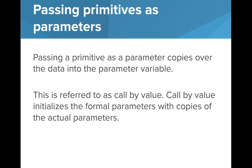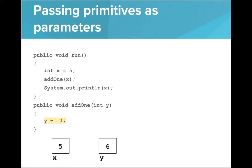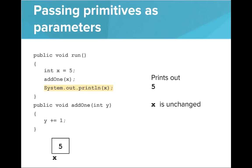Another big difference comes in when passing primitives and objects as parameters to methods. Passing a primitive as a parameter copies over that data into the parameter variable. For example, if I have int x equal to five and call the method addOne passing x, this will copy that five into a new variable y, the parameter. Both x and y now hold five. Inside the method, we add one to y, changing y to six. As soon as the method is over, y goes away, and we print x and still get five. X is unchanged by the method addOne.